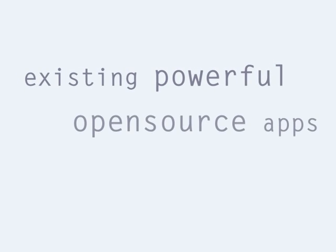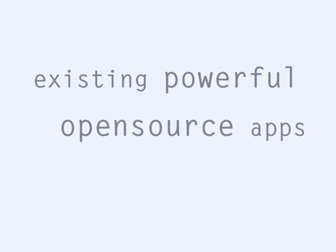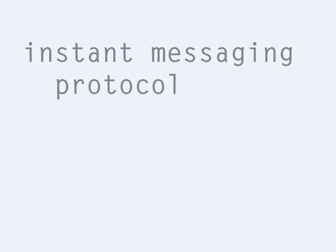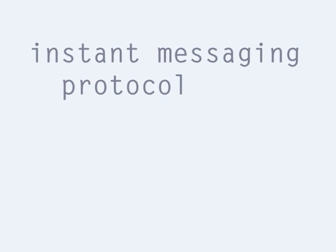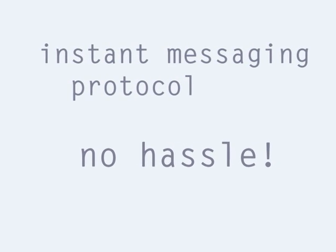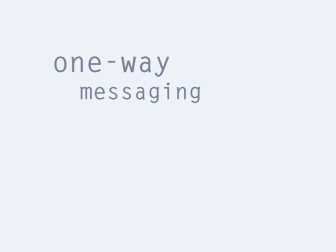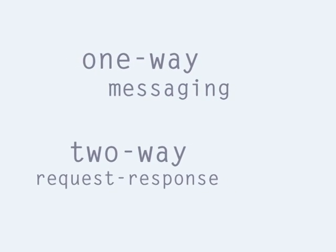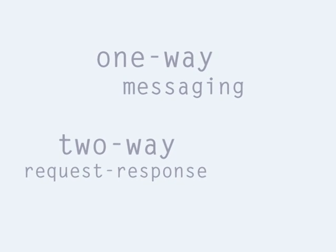XMPP comes with some great advantages. First of all, we can rely on existing servers and components which have proven themselves along the years, some of which are developed and released completely under open source. Secondly, by choosing an instant messaging protocol, managing things such as synchronous or asynchronous communication or presence control are already taken care of. Also, XMPP allows direct messaging from an entity to another entity, but it also allows two-way request-response mechanisms, which are very useful when talking about machine-to-machine communication.